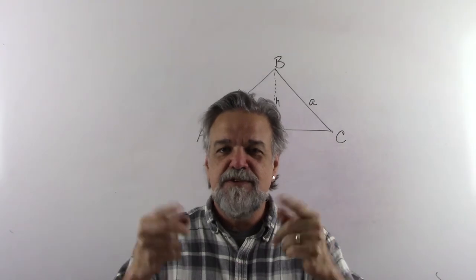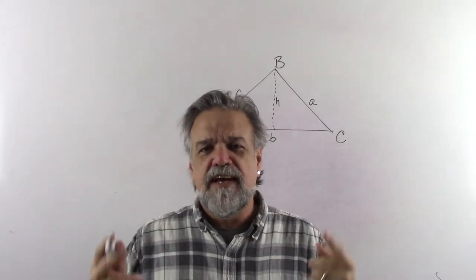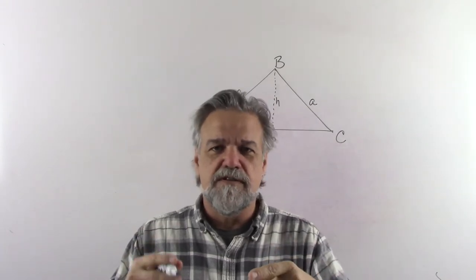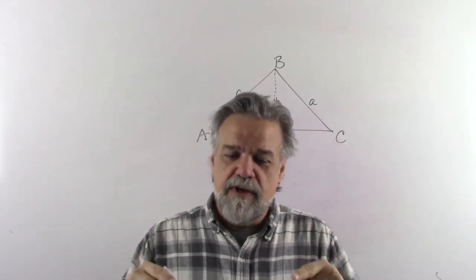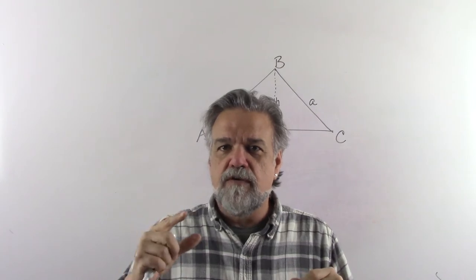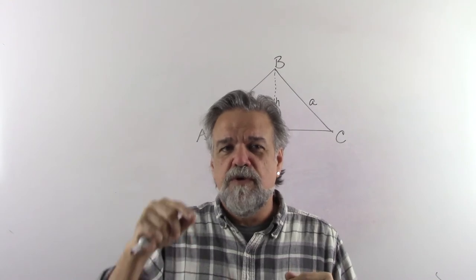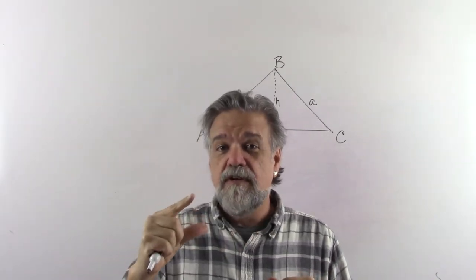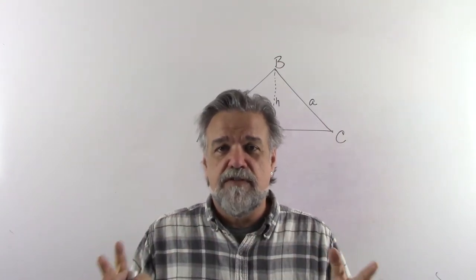Hey, math students, let's do some more trigonometry. In the last video, we talked about the law of sines, also known as the sine rule, also what I call the sine property. What we found at the end of that video was a triangle — an oblique triangle, which means a non-right triangle. When we had two sides and the included angle, the sine rule was no help at all in helping us solve that triangle.